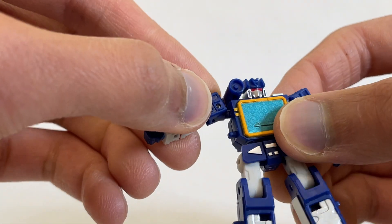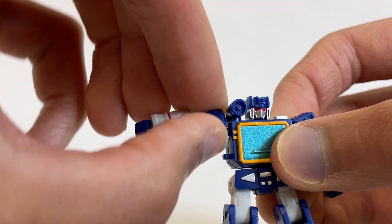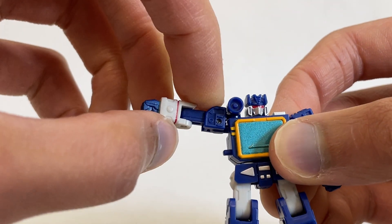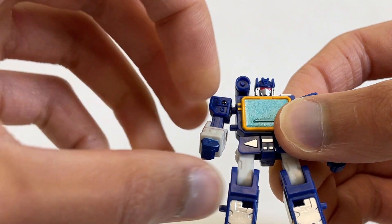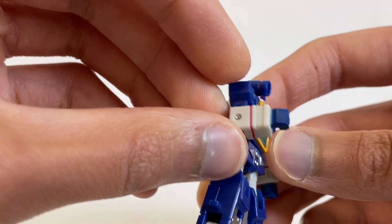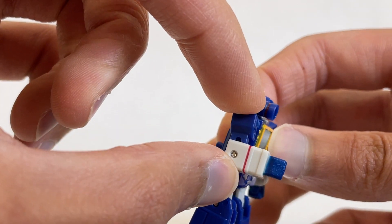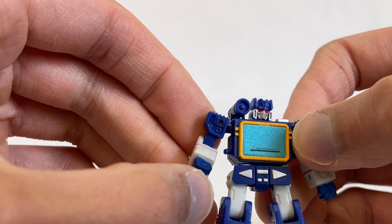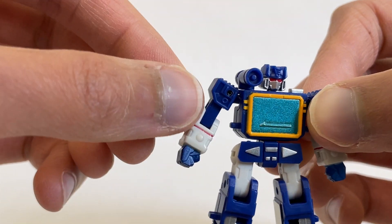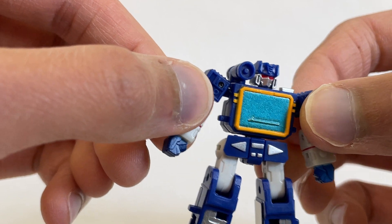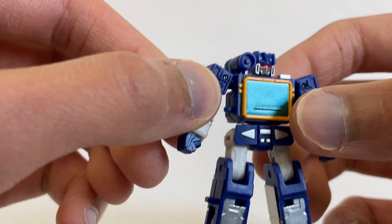At the shoulders, we have hinge joints, so you can rotate the whole 360, come out all the way to 90. And then at the elbows, we do get a full 90 degree bend. And then nothing at the wrists, the standard Dr. Wu fists, just like with Optimus Prime and the majority of the other figures.